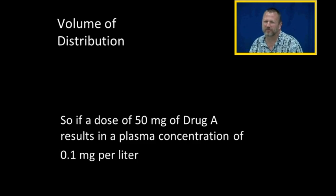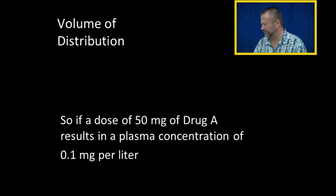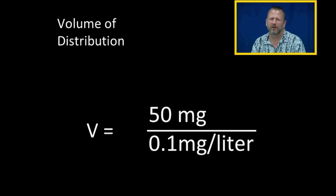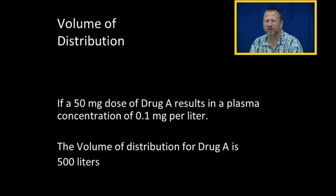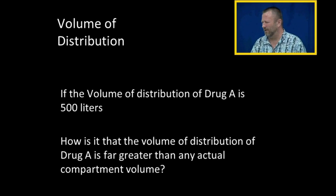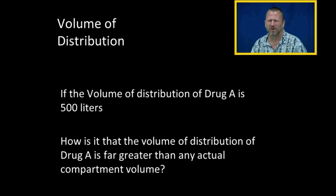If a dose of 50 milligrams of drug A results in a plasma concentration of 0.1 milligrams per liter, plugging that into our equation gives a volume of distribution of 50 milligrams divided by 0.1 milligrams per liter — which equals 500 liters. But our total body water is only 42 liters, so how is the volume of distribution for drug A far greater than any actual compartment volume?